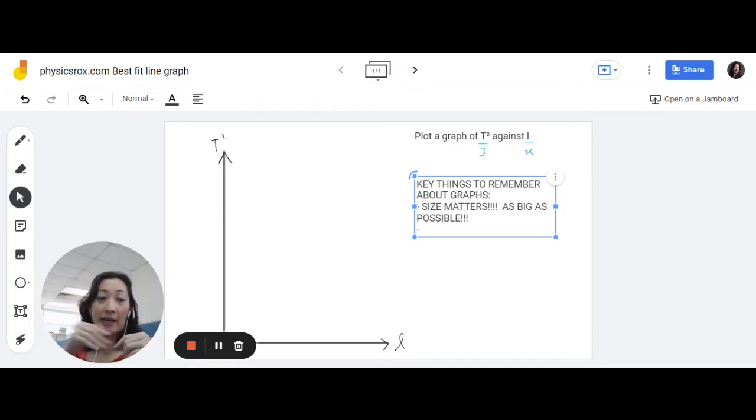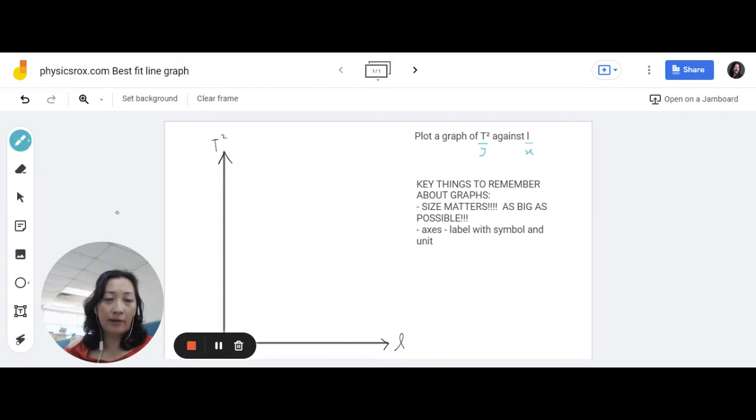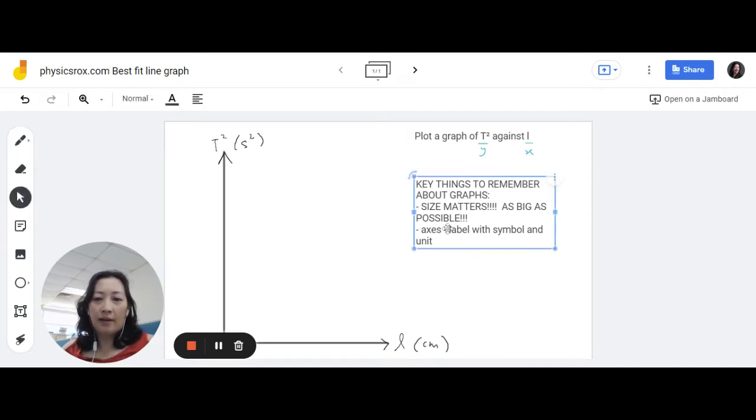So that when you start planning your scale, then you can plan the scale based on the size that you want to draw. So remember that when you draw out your labels, when you want to label your axes, the axis you must remember to label with the symbol and unit. Not only t squared and L, you also need to label the unit. So you can either use a slash or bracket. Either one, not both.